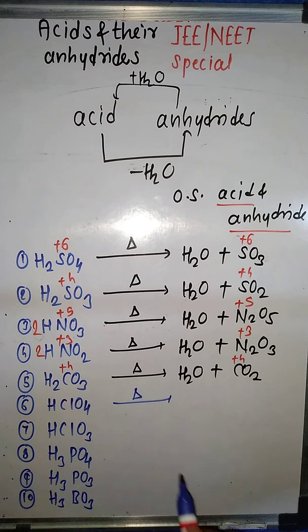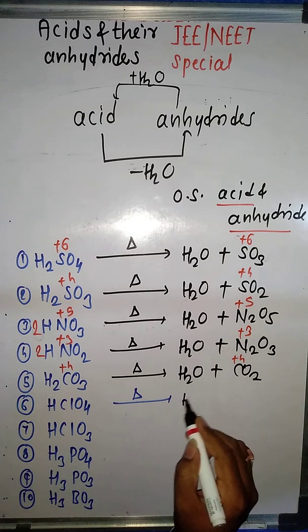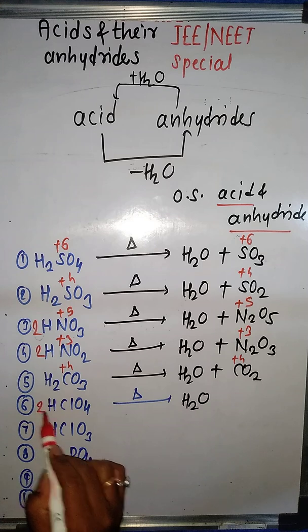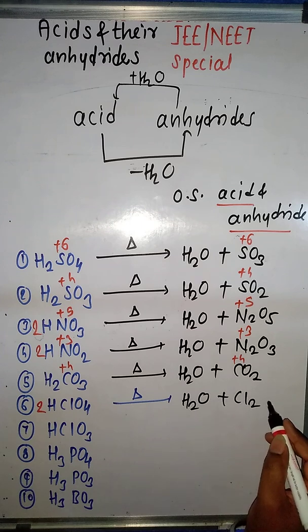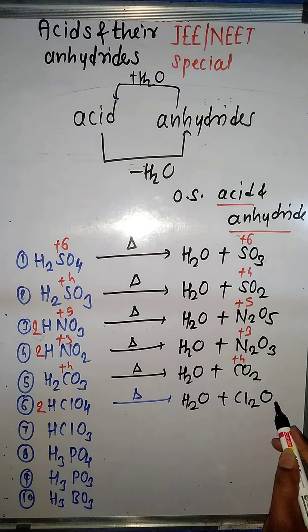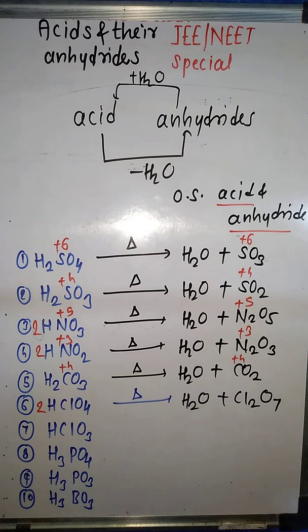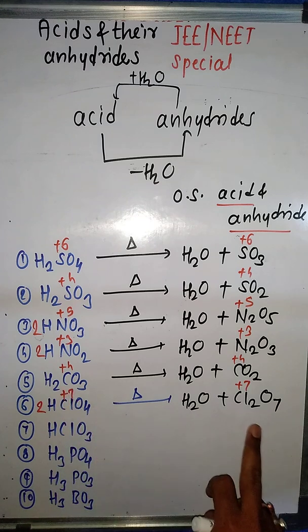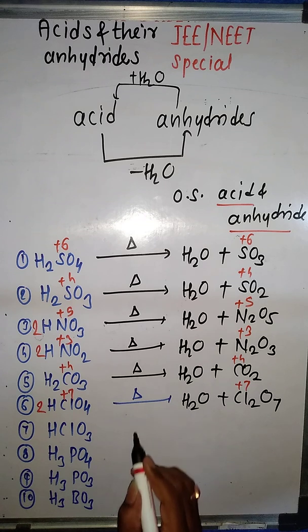Next example is HClO₄ (perchloric acid). Removing the water molecule: H₂O has two hydrogens but HClO₄ has one, so we multiply by two. Hydrogens are balanced. What's left behind is two chlorines and seven oxygens, giving Cl₂O₇. The oxidation state of chlorine in HClO₄ is +7, and in Cl₂O₇ it is also +7. So Cl₂O₇ is the anhydride of HClO₄.